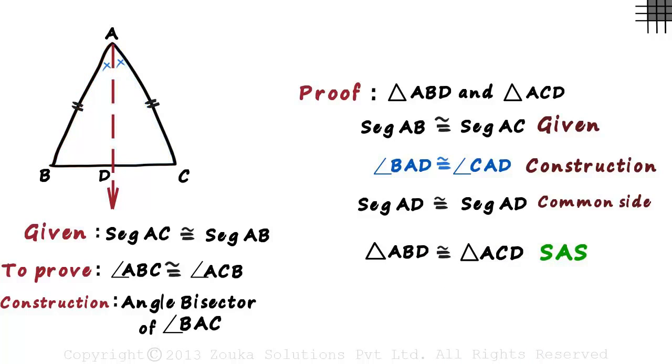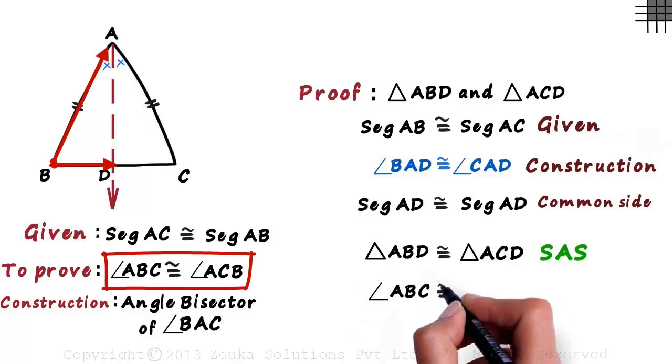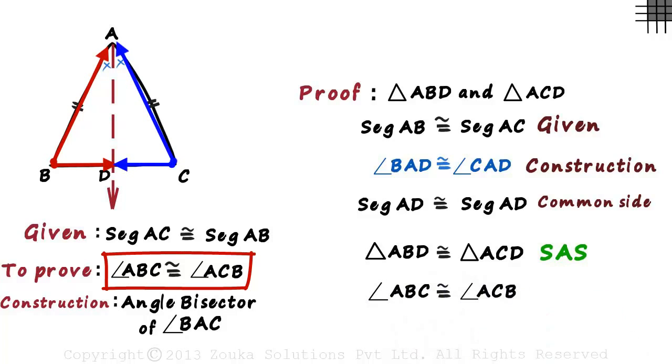This in turn tells us that angle ABC is congruent to angle ACB since they are corresponding angles of congruent triangles. We proved these two angles congruent. We use the side angle side axiom to prove the isosceles triangle theorem which says that angles opposite equal sides are always equal.